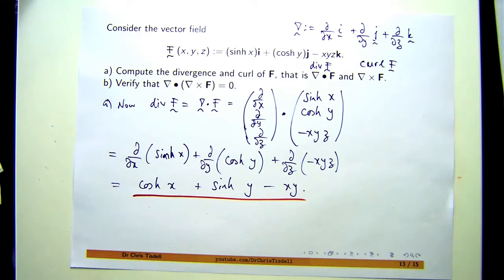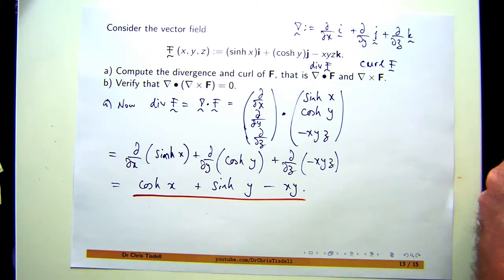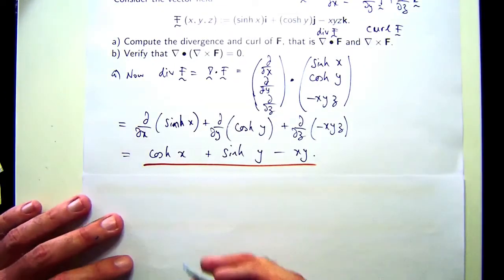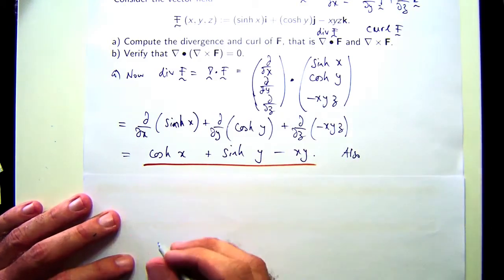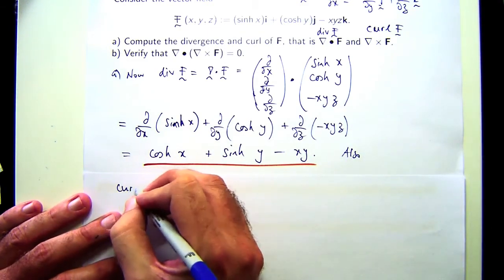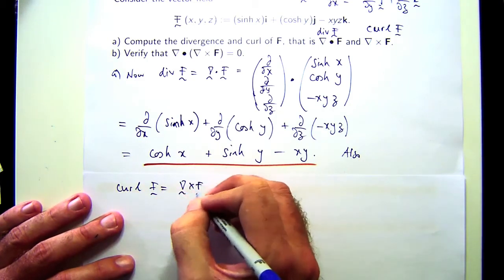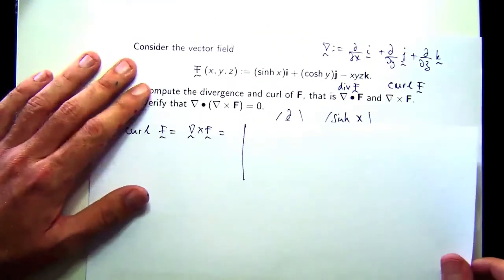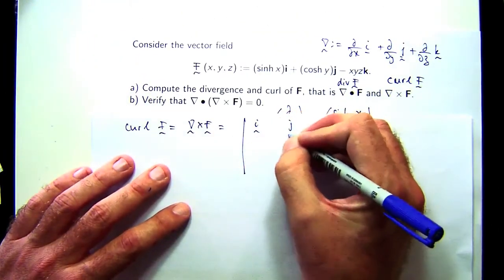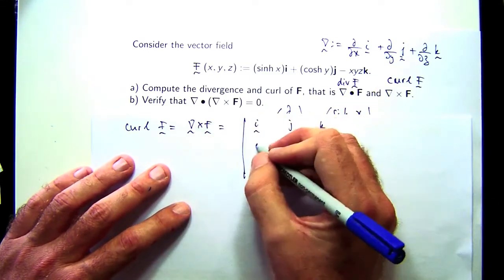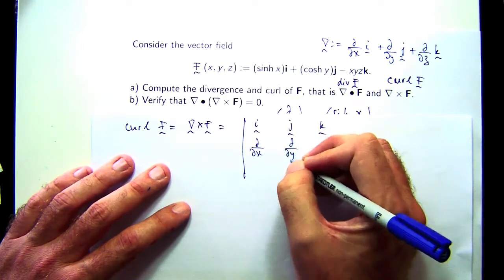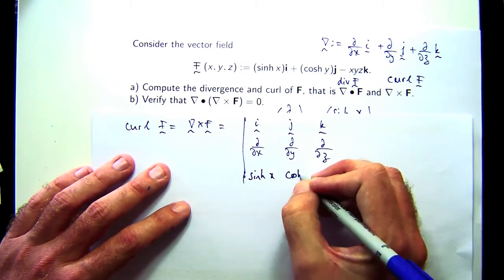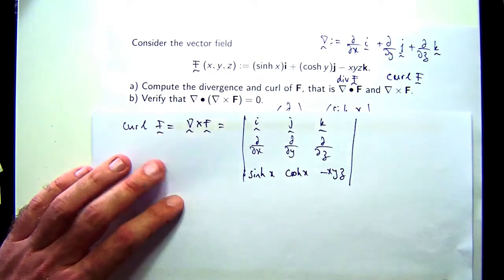The second part of this question asks us to calculate the curl. Let's go through and calculate that. Now with the curl, you can use a determinant. You write the i, j's, k's along the top, you write the differential operators along the middle line, and then you write the components of F along the bottom line.